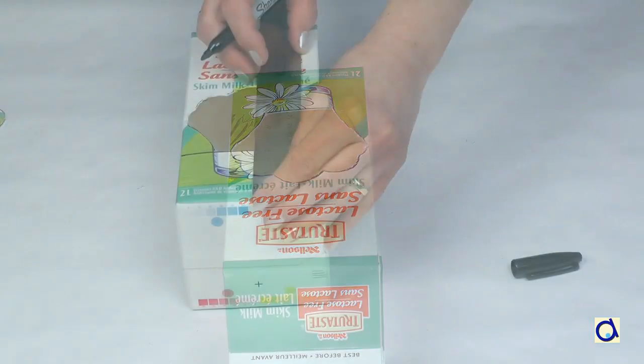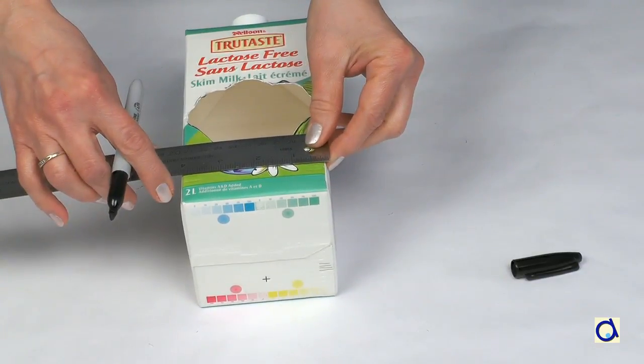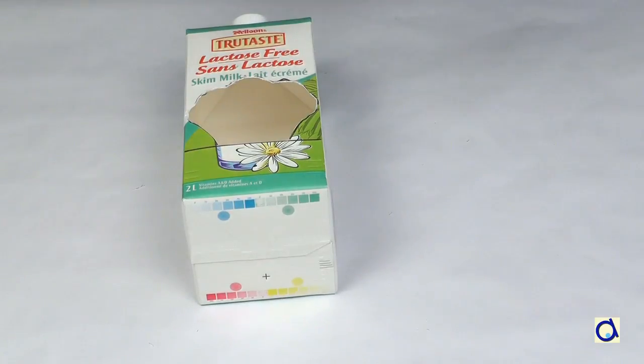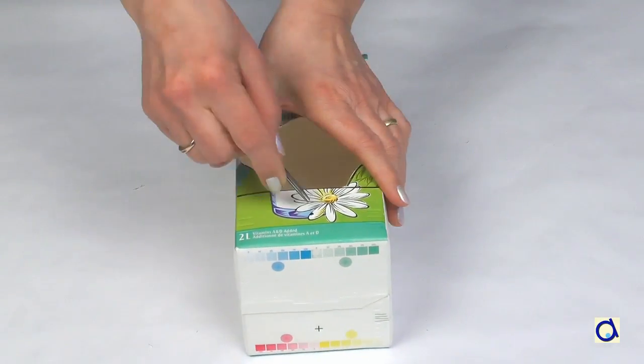When you are satisfied with the holes, cut a wooden dowel that is longer than the width of the milk carton. The dowel will serve as a perch for the birds so that they can easily access the food.